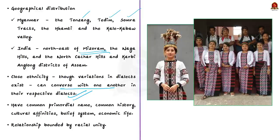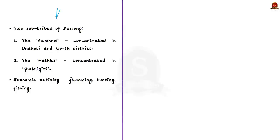The close ethnicity of this tribal group is proved by the fact that though there are variations in dialects, the Zomi can converse with one another in their respective dialects with 70% comprehension or understanding — unlike any other tribe. The Zomi people have a common primordial name, common history, common cultural affinities, belief systems, economic life, and a common dream of restoring their glorious past. Their relationship is bound not just by geographical boundaries, but also by racial unity. The Darlongs are one of the communities within the Zomi major tribe.